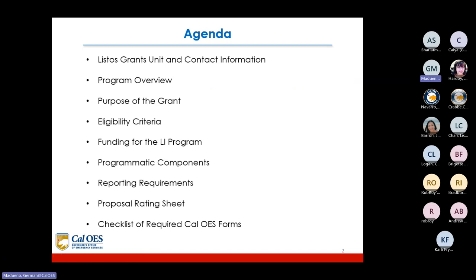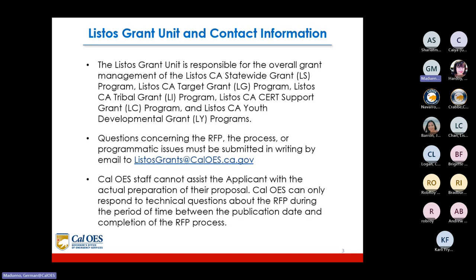On the agenda today we're going to be talking about the Listos Grant Unit and contact information, the program overview, the purpose of the grant, eligibility criteria, funding for the LI program, programmatic components, reporting requirements, proposal rating sheet, and a checklist of required CalOES forms.